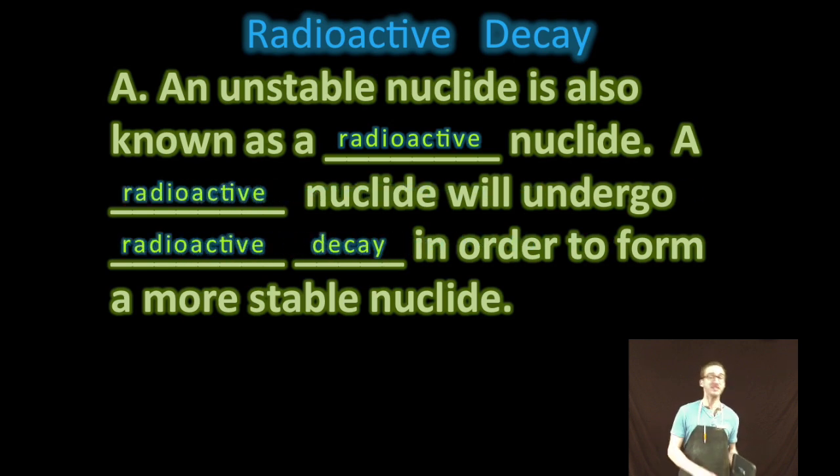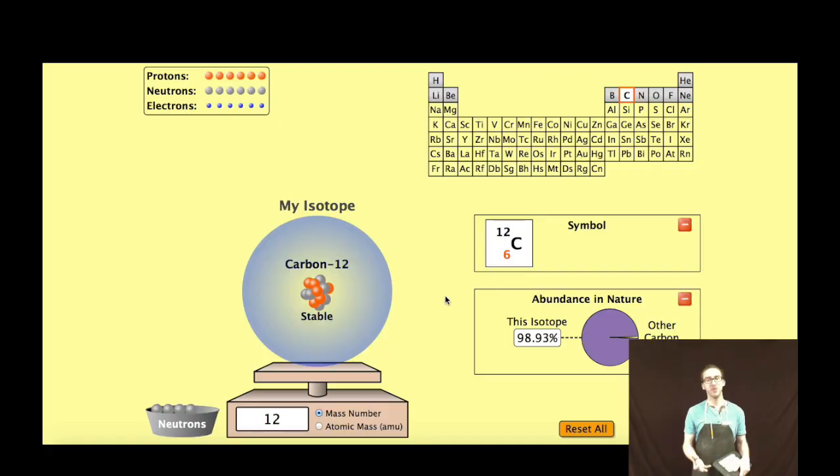Now if a nuclei is not stable, or we have an unstable nuclei, it's going to undergo what's called radioactive decay in order to become more stable. So throughout this unit, as we refer to or talk about unstable nuclei, we're really talking about radioactive nuclei.